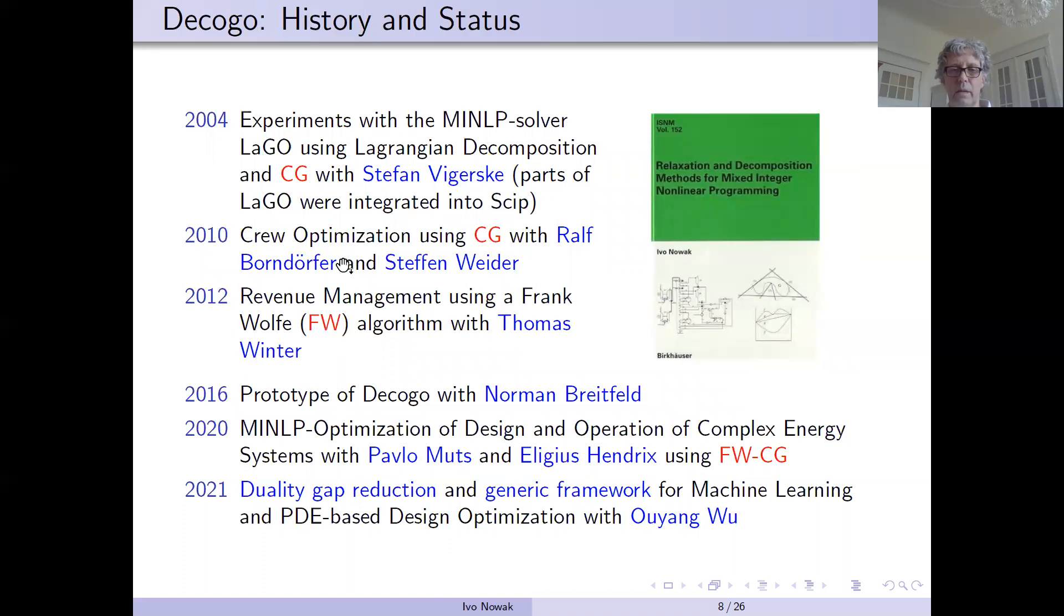Later, as I said, I was on the team where we developed crew optimizers, and I learned from Ralf Borndörfer and Stefan Weider a lot of column generation. Then I switched to revenue management group where we applied Frank-Wolfe.